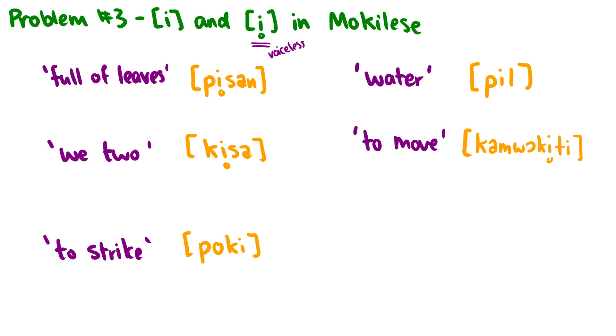Do we have any minimal pairs here? Do we have two words that differ just by one sound? I look here, I don't see any. Okay. So this leads me to think, okay, I don't have any minimal pairs. And this is a phonology question. So I'm probably looking at allophones of the same phoneme.